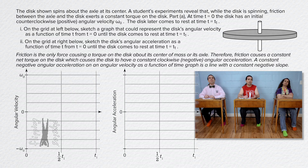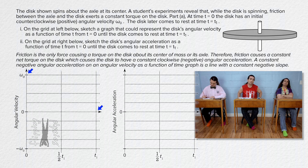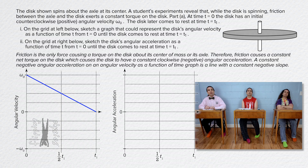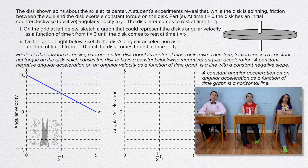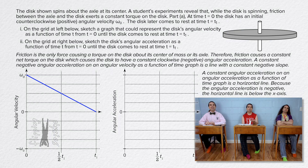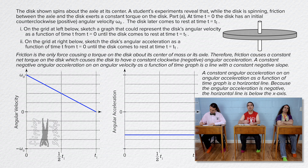The initial angular velocity is omega 0 and the final angular velocity is 0 at time t equals t1. So the angular velocity as a function of time graph is a straight line with a negative slope starting at omega 0 and ending at 0. A constant angular acceleration on an angular acceleration as a function of time graph is a horizontal line. Because the angular acceleration is negative, the horizontal line needs to be below the x-axis.